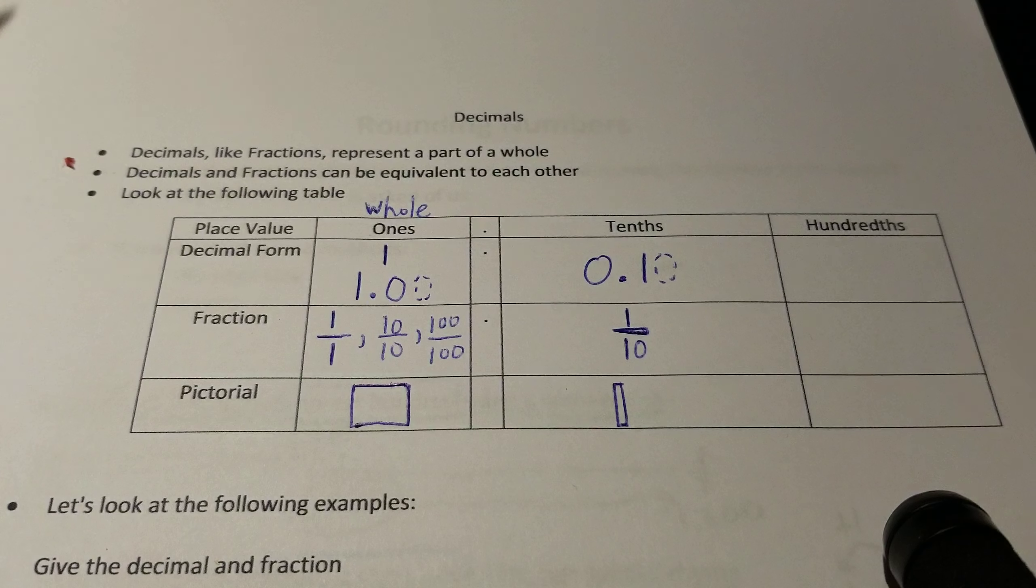Let's look at the decimal. We ask ourselves again. Is there an entire model shaded? Yes. Do we have any tenths? Remember, ten units make up a rod. So I have a full set of ten here, so that's one rod. I have a full set of ten here, so that's two rods. This is not a full set, so that can't count. So I can count two rods. And then finally, the number of hundreds left over. One, two, three, four, five, six, seven, eight, nine. And these are equivalent to each other.